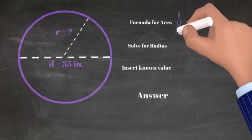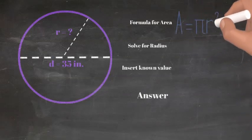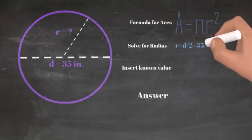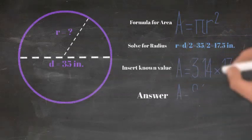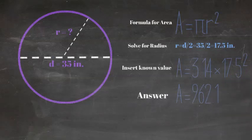Now that we have the radius, let's plug in our known values for this equation to find the area of this circle. We now have pi times 17.5 squared. When we solve this problem, the total area of this circle is 962.1 square inches.